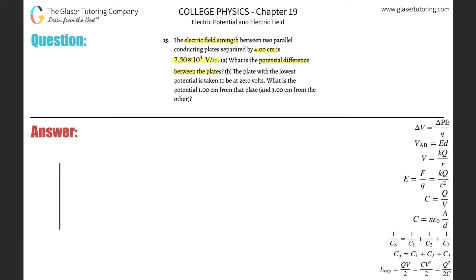All right, so you've got two plates here, and they're separated by a distance of four centimeters. So let's convert that right away to meters, so 0.04 meters. It tells us then that the electric field strength between them, so I'm going to write E, is going to be equal to 7.5 times 10 to the 4 volts per meter.